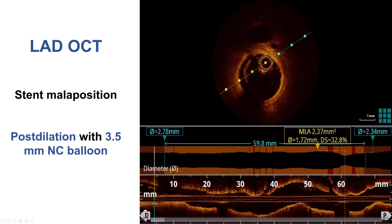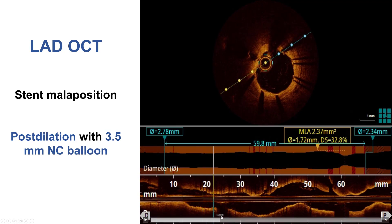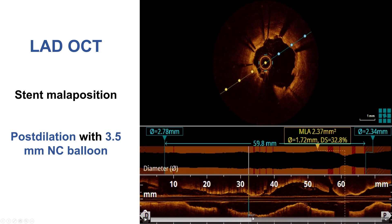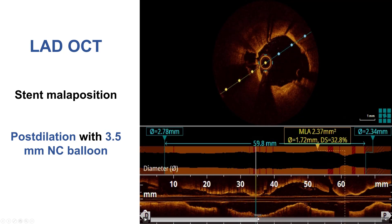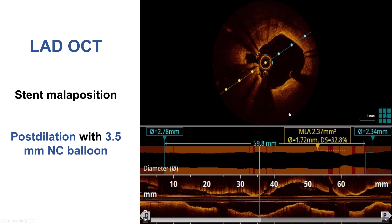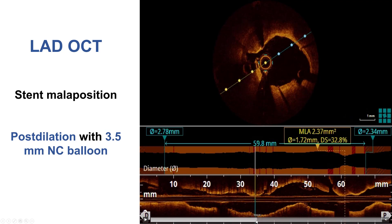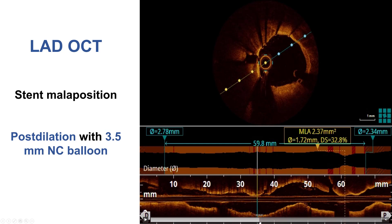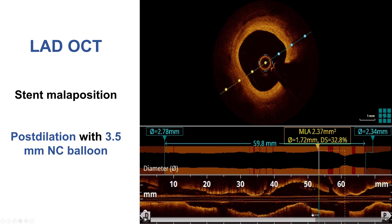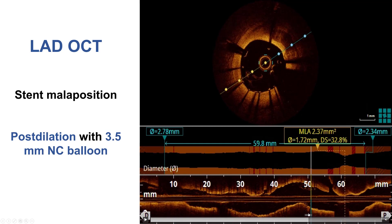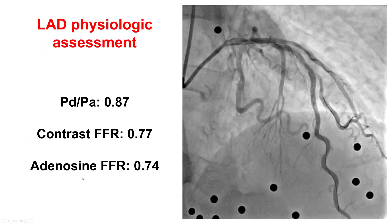We did an OCT to check our angiographic result and saw that the stent was well-expanded and well-apposed. This shows the origin of the diagonal with the side branch coming in and the second guide wire. The vessel is well-expanded and the stent is well-expanded. There was some malaposition at the proximal edge of the stent, so we post-dilated with a 3.5 mm non-compliant balloon.